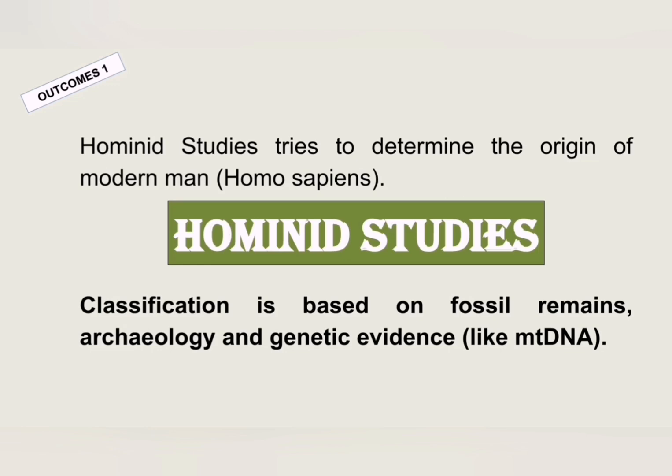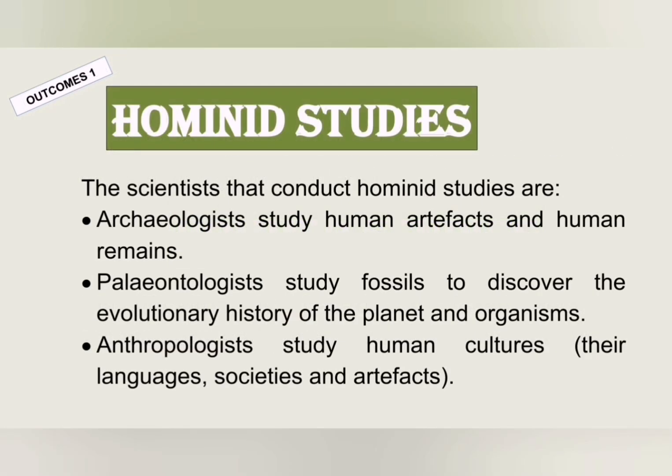The classification of humans, human ancestors, and the fossils found within hominid study is based on three parts, or three bits of evidence. The first is called archaeology, the next is called paleontology, and the next is called anthropology. You can see these three definitions here.